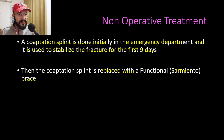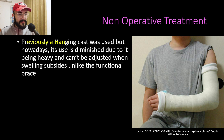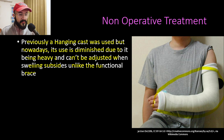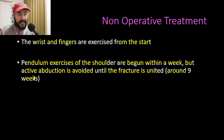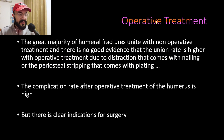The coaptation splint is applied initially in the emergency department to stabilize the fracture for the first nine days, then replaced with the Sarmiento brace. Previously a hanging cast was used, but it is now less favored because it is heavy and cannot be adjusted when swelling subsides, unlike the functional brace. The patient should exercise their wrist and fingers from the start, with pendulum shoulder exercises begun within a week.